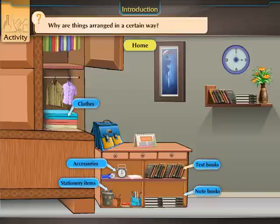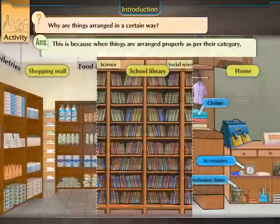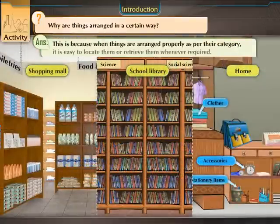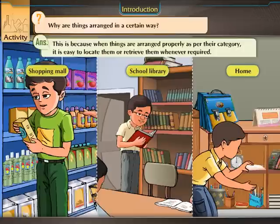Why are things arranged in a certain way? This is because when things are arranged properly as per their category, it is easy to locate them or retrieve them whenever required.